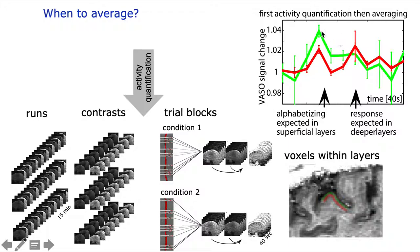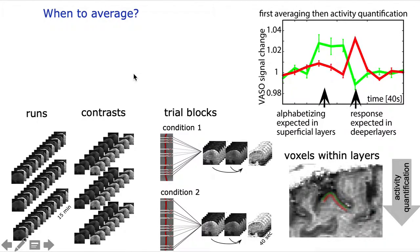This means you can separate the different responses of upper and deeper layers very differently depending on if you average here or if you average here. If we average as late as possible, we can better separate the two different task conditions across layers.